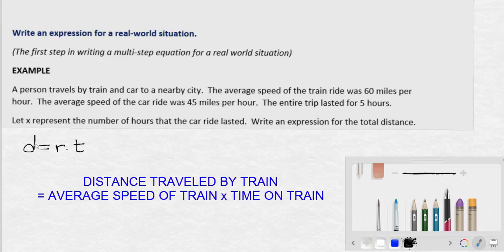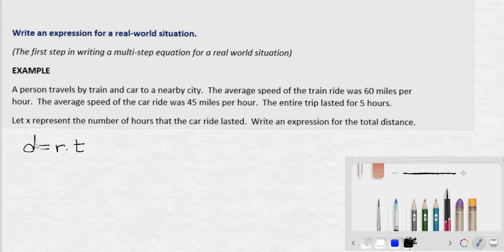In this case, the distance that a person travels by train is going to be equal to the rate or average speed of the train times the amount of time that the person was on the train. Similarly for the car.